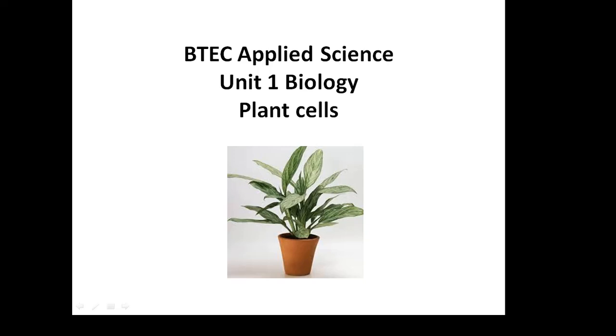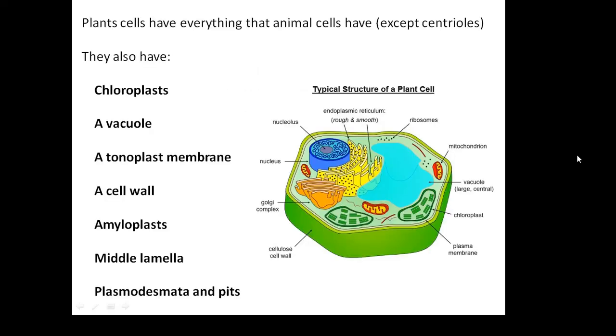Tech Applied Science Unit 1 Biology. Plant cells. Now plant cells have got everything that animal cells have. So the big list of bits of an animal cell that applies to plant cells as well except for centrioles. They don't have centrioles.